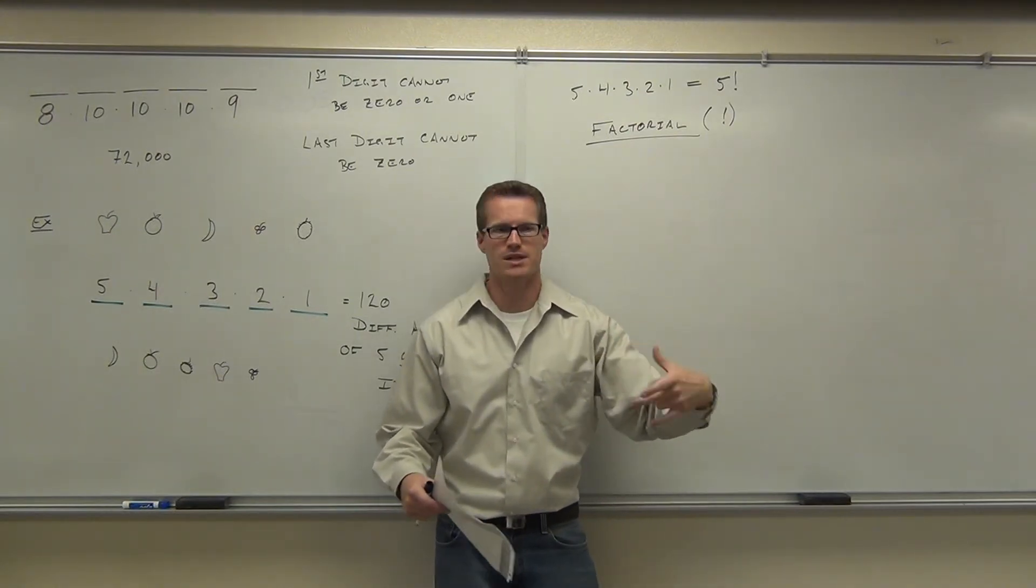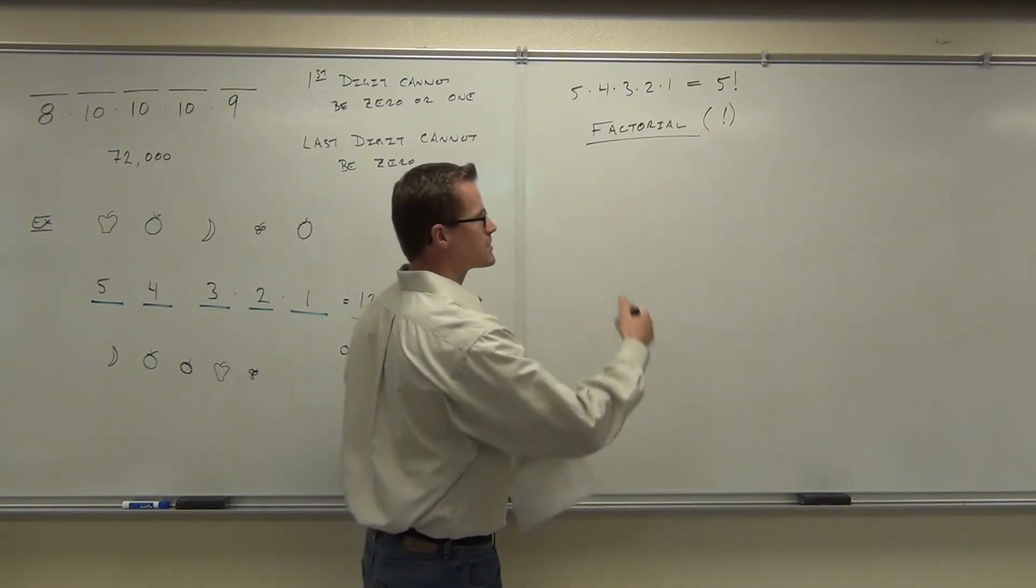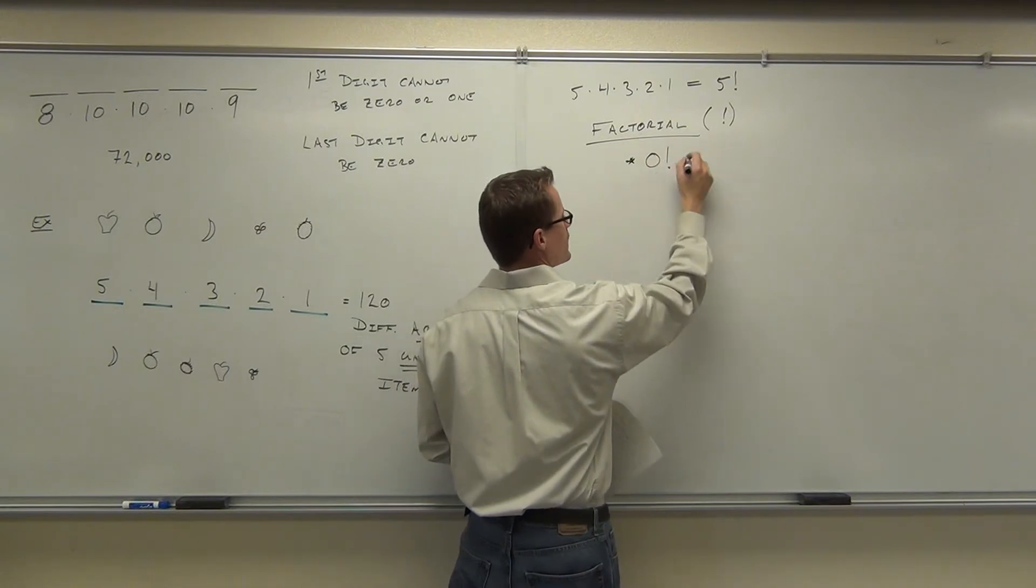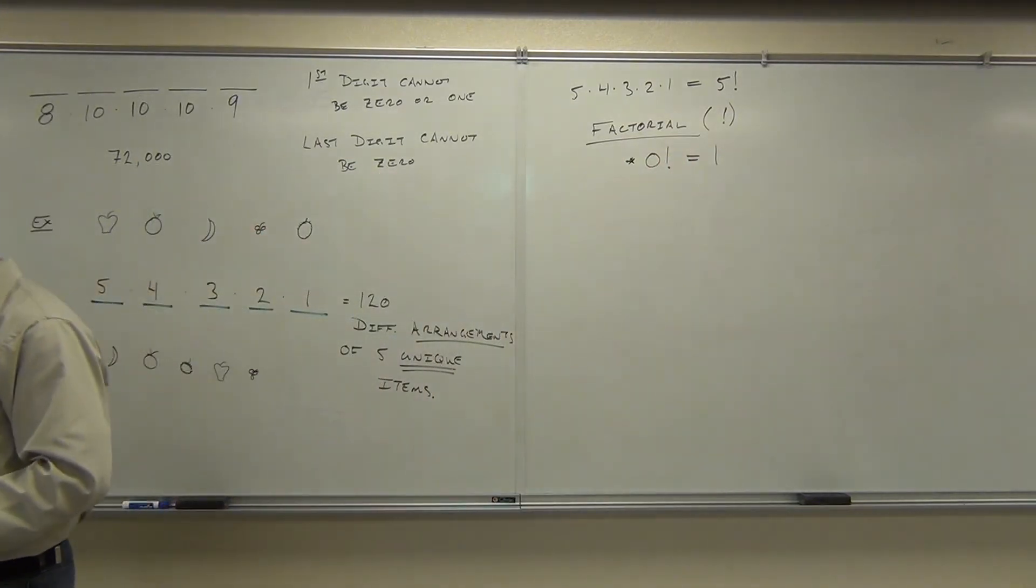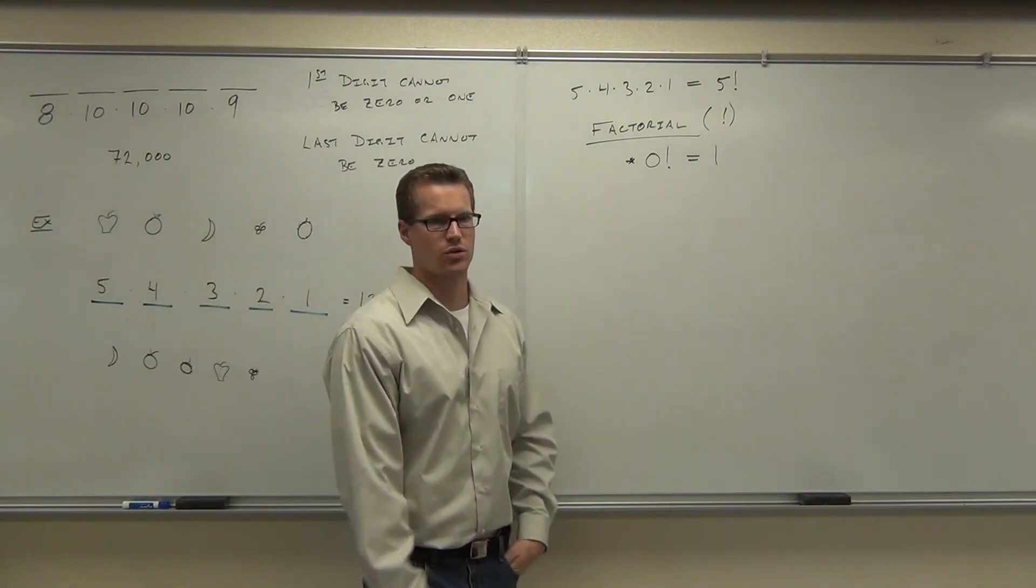Ten factorial would be ten times nine times eight times seven times six, all the way down until you get to one. The zero, we have a definition for that, and you need to know. Zero factorial is defined to be one. That's just a definition. We have to have that, otherwise the factorials do not work.